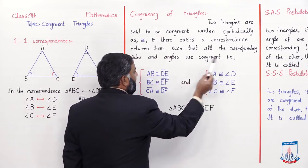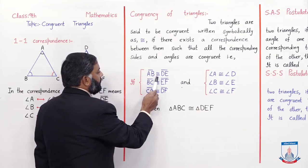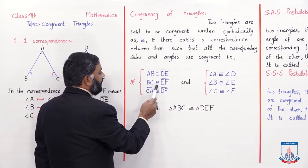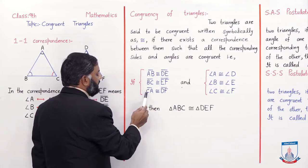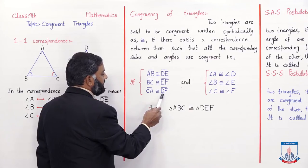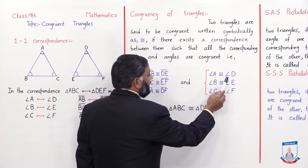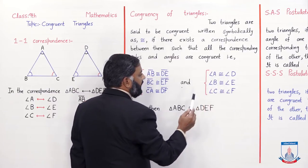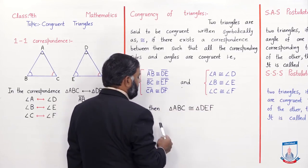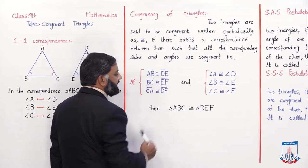That is, if line segment AB is congruent to line segment DE, line segment BC is congruent to line segment EF, line segment CA is congruent to line segment DF, and angle A is congruent to angle D, angle B is congruent to angle E, angle C is congruent to angle F — then triangle ABC is congruent to triangle DEF.